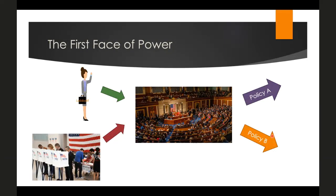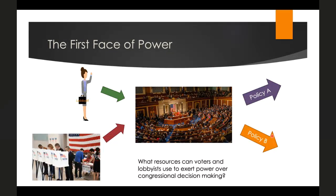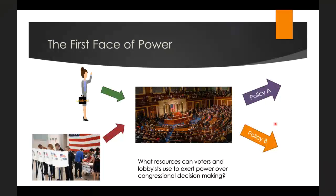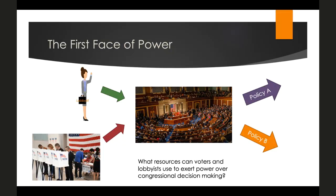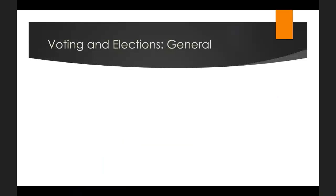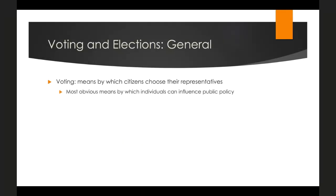We're going to look at both voting and lobbying in turn, adding some complexity throughout, to show how they demonstrate the first face of power. The first face of power is the idea that resources can be used to influence outcomes. So what resources do voters have, or what resources can lobbyists use to exert power over congressional decision-making?